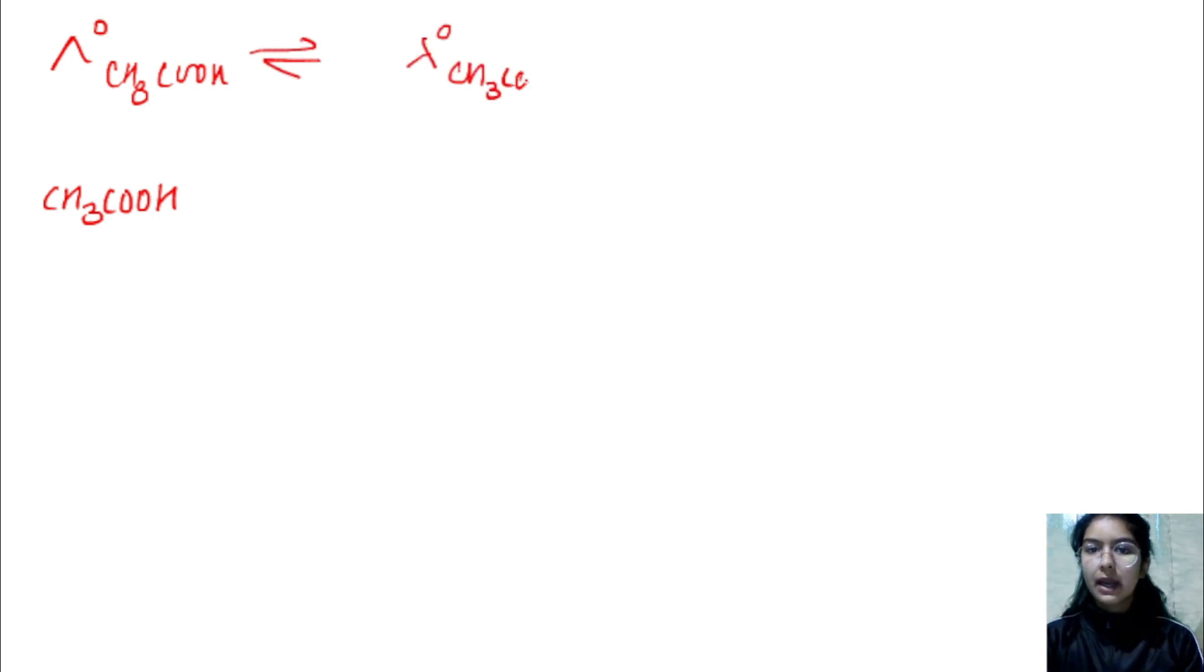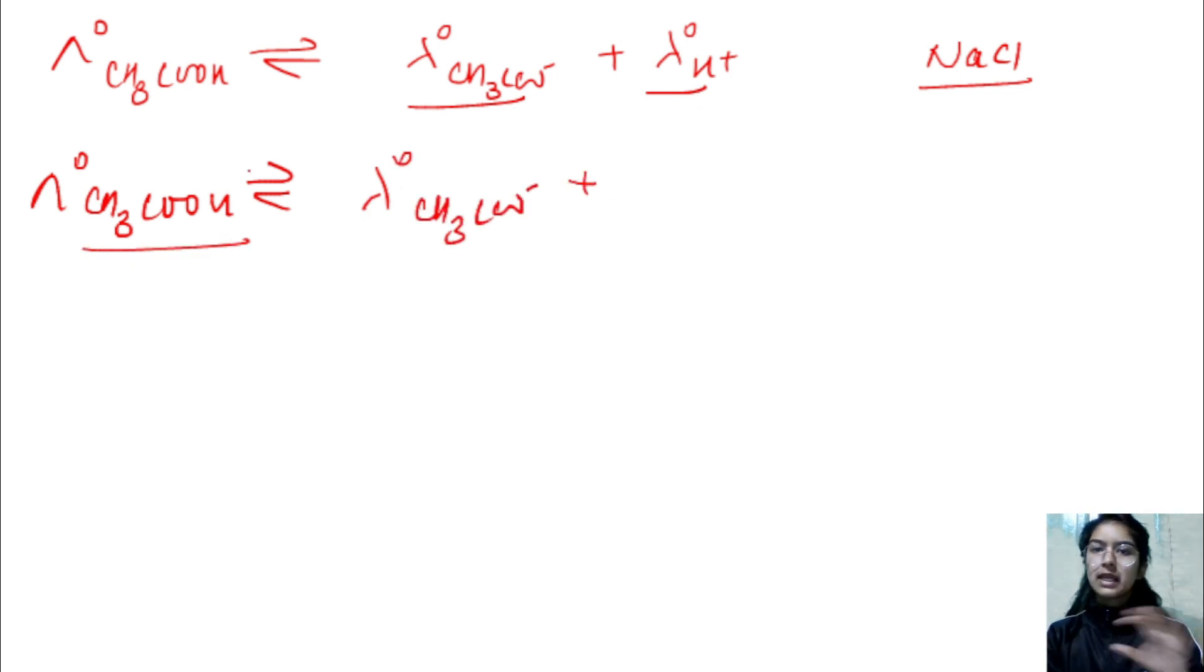For weak electrolytes like CH3COOH, it will dissociate to CH3COO minus plus H plus. So the limiting molar conductivity will be lambda naught CH3COO minus plus lambda naught H plus. How do we calculate this? We have to insert NaCl in it. Because directly, I cannot calculate it - I don't know individually its values.